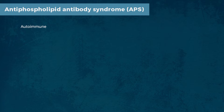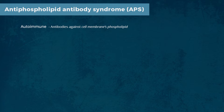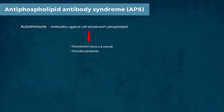This syndrome is an autoimmune condition in which antibodies develop against proteins that bind to the cell membrane's phospholipids. These antiphospholipid antibodies in the serum predispose the patient to venous and arterial thrombosis, thrombocytopenia, and recurrent fetal loss.